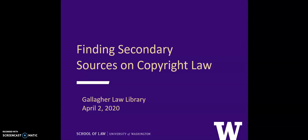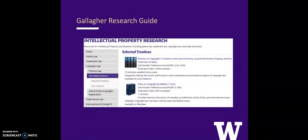Finding Secondary Sources on Copyright Law from the Gallagher Law Library. The Gallagher collection includes a wide variety of materials on copyright law, both in print and electronically. This volume can be a little overwhelming, so a great first stop in your research is the Intellectual Property Research Guide.